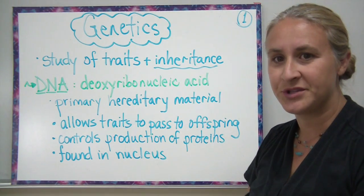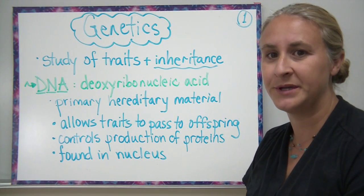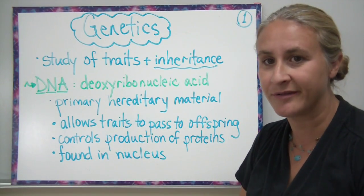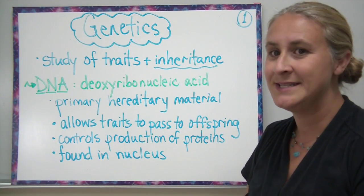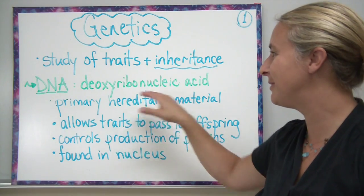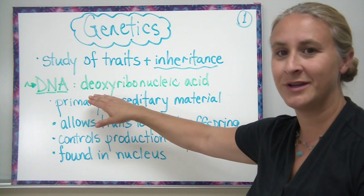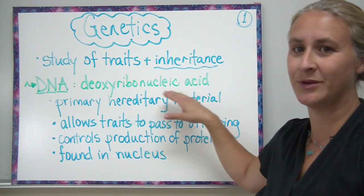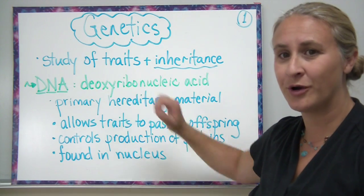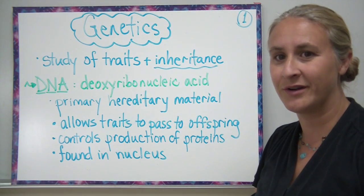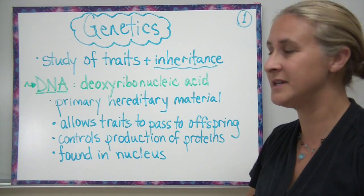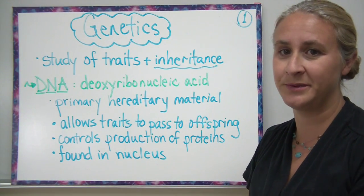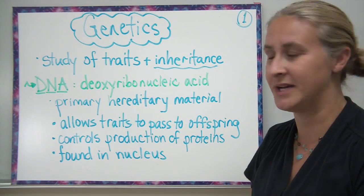The main compound we're going to be talking about when we discuss genetics is DNA, which most of you have heard of before. DNA stands for an incredibly long two words really: deoxyribonucleic acid. The ribo part, we're going to learn later on, refers to the sugar that's involved. There are other types of nucleic acids which we'll be discussing at other times.